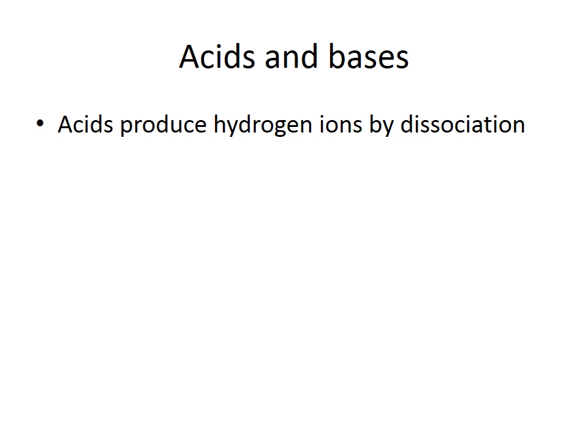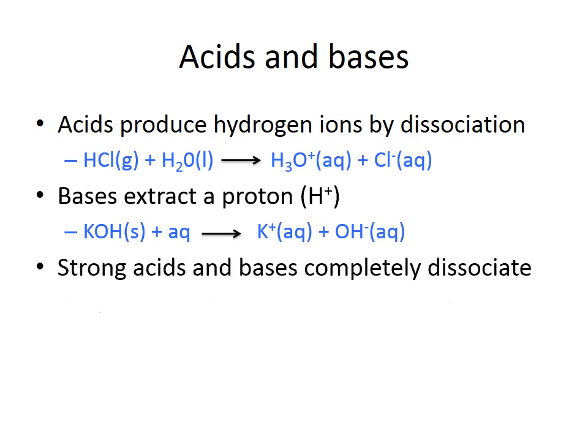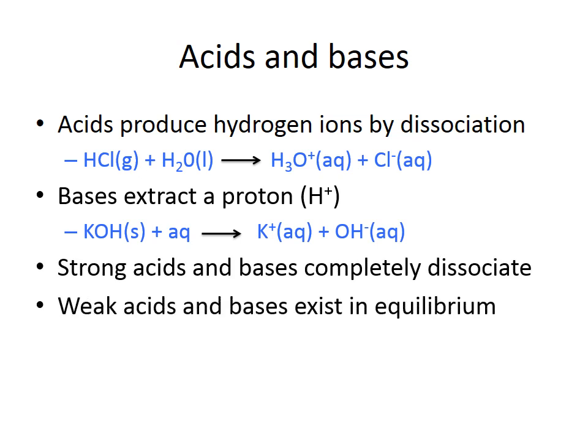To briefly recap: acids are able to produce hydrogen ions by dissociation — for example, bubbling hydrogen chloride gas through water produces a hydronium ion (H₃O⁺) and a chloride ion (Cl⁻). Bases are able to extract a proton (H⁺) — for example, dissolving potassium hydroxide in water gives K⁺ and OH⁻. Strong acids and bases completely dissociate, whereas weak acids and bases exist in an equilibrium, and it is this equilibrium that we exploit in buffers.